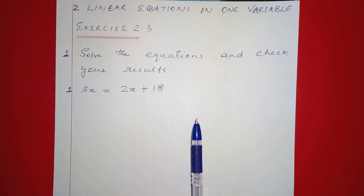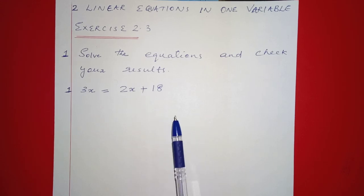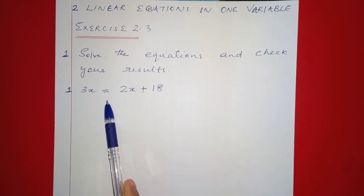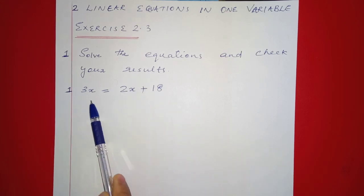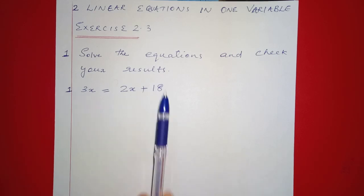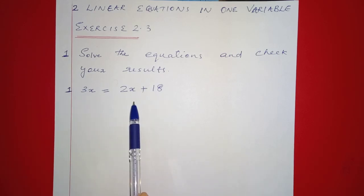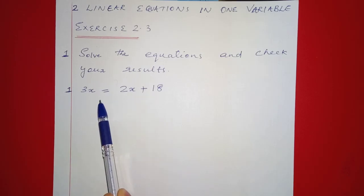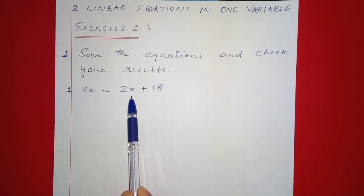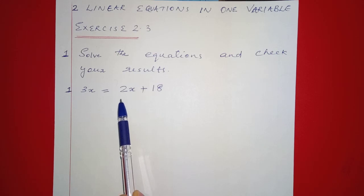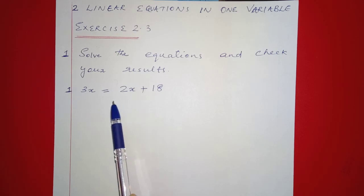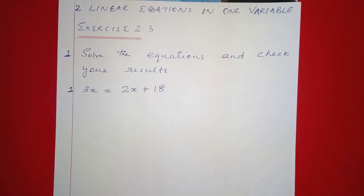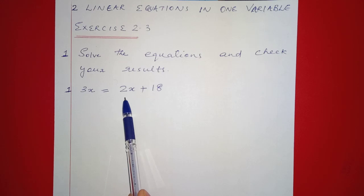We have to solve the problem with x on one side. We have to collect the right side and left side. We will solve the problem by moving 2x, since x appears on two sides, we bring them together. Then we will solve the problem with 2x.